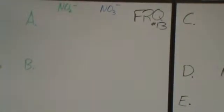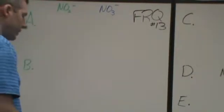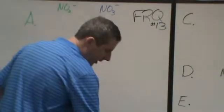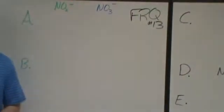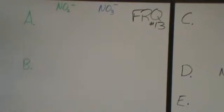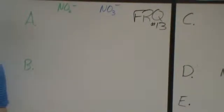This is FRQ number 13 — the bonding one. We're going to look at Lewis structures for nitrite and nitrate, different elements of bonding, oxidation, redox, resonance, and violations of the octet rule.